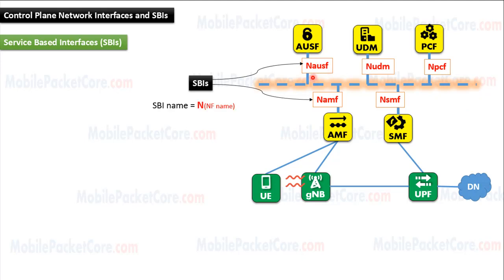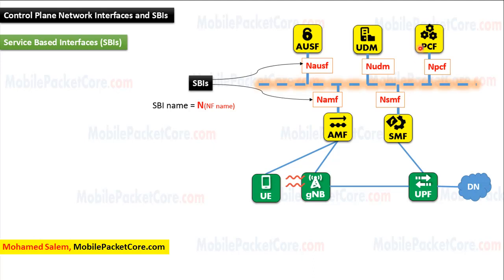The service-based interface of each network function is named as following: the letter N followed by the name of the network function. So the interface of the AMF is named NAMF, the interface of the SMF is NSMF, and the interface of the PCF is NPCF. The same applies to other network functions in the Control Plane.